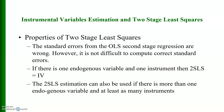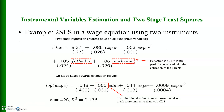If there is one endogenous variable and one instrument, two-stage least squares equals instrumental variable estimation. Two-stage least squares can also be used when there is more than one endogenous variable and at least as many instruments. As an example with two instruments for education, education is first regressed on experience, experience squared, father's education, and mother's education. Education is significantly partially correlated with parents' education. The 2SLS results show log wage regressed on education, experience, and experience squared, but the return to education is much lower and much more imprecise than with OLS.